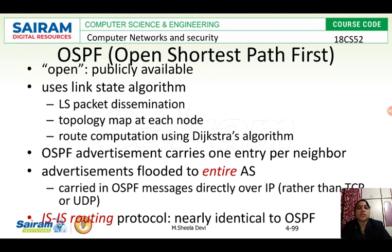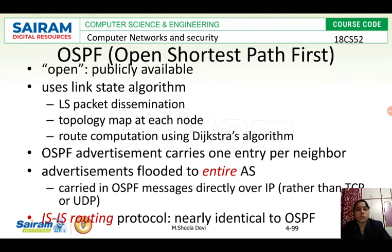OSPF advertisement carries only one entry per neighbor, whereas in the previous RIP protocol 25 entries were allowed. Advertisements are flooded to the entire autonomous system — if there are four or five routers, the advertisement is flooded to all of them. It is carried in OSPF messages directly over IP. UDP is used since there is no need for acknowledgement or guaranteed service.